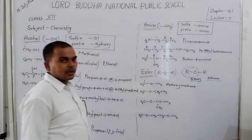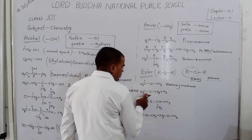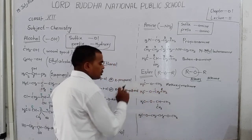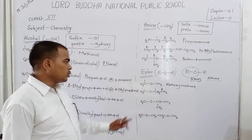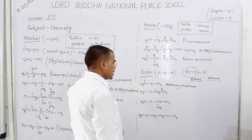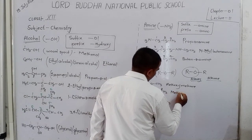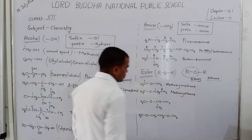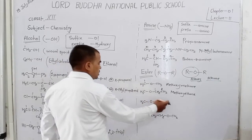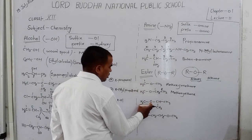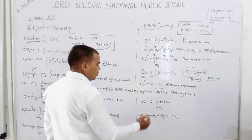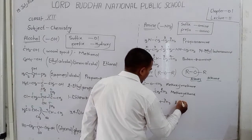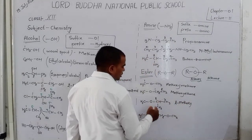In the next compound, one carbon is on one side but two carbons on the other side. The two-carbon side is the parent chain — write 'ethane'. At the first position, methoxy is present. It is not necessary to represent the first position. So write the name: methoxy + ethane = Methoxyethane. In another example, there is a three-carbon chain on one side and one carbon on the other. The three-carbon side is the parent chain. Counting: 1, 2, 3. At the second position, a methoxy group is present — write '2-methoxy'. For three carbons: 'propane'. Name: 2-Methoxypropane.